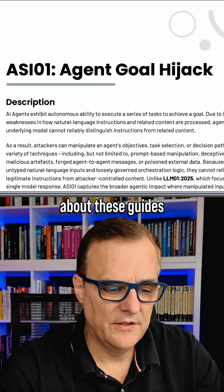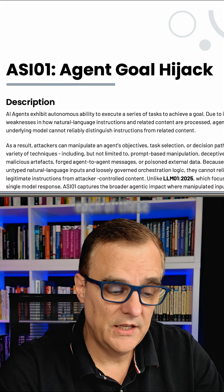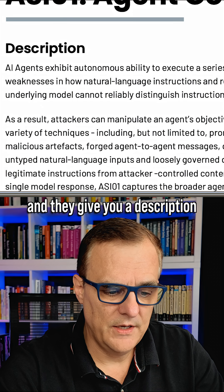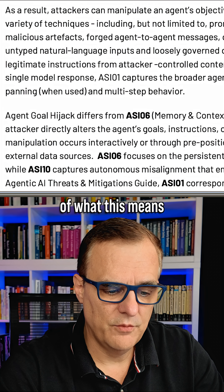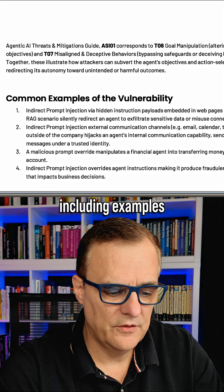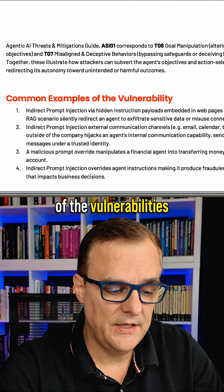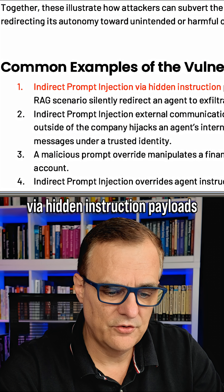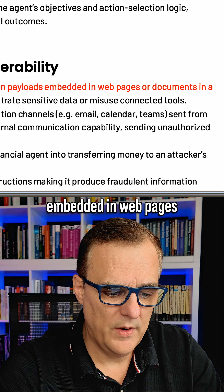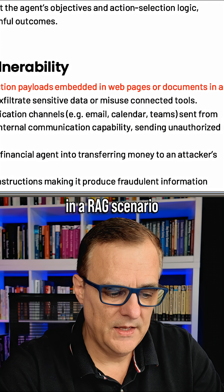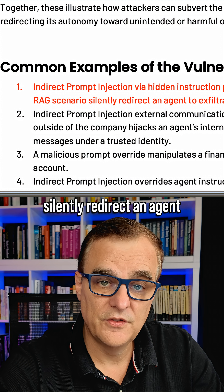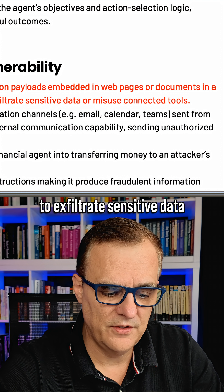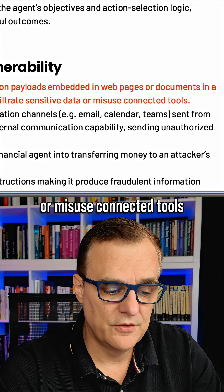What's great about these guides is they give you information about each of these, such as agent goal hijack. They give you a description of what this means, including examples of the vulnerabilities such as indirect prompt injection via hidden instruction payloads embedded in web pages or documents in a RAG scenario, and silently redirecting an agent to exfiltrate sensitive data or misuse connected tools.